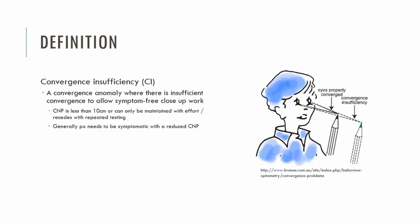Or when the patient attempts to converge at a normal distance, like 6cm, they're struggling to do so — it's done with effort and with symptoms. Overall, convergence insufficiency is a convergence anomaly where the patient is symptomatic, and that is key. We cannot classify a patient who just has reduced CMP with no symptoms as having CI.